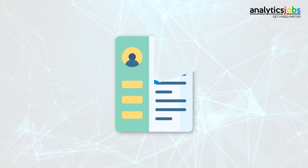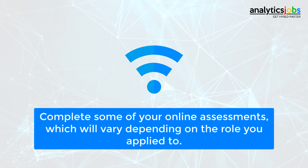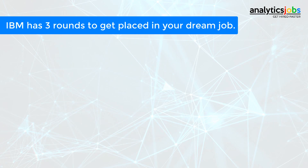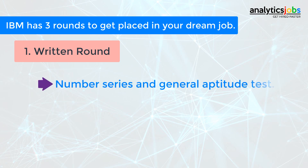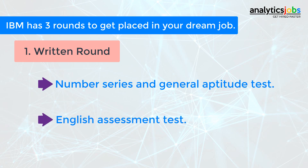You may be asked to complete some online assessments, which will vary depending on the role you apply to. IBM has three rounds to get placed in your dream job. The first is the written round, in which you might be asked about the Series and General Aptitude Test, and the English Assessment Test. For the Series and General Aptitude Test, there is a time limit of 2 hours 15 minutes, and for the English Assessment Test, 20 minutes are provided.